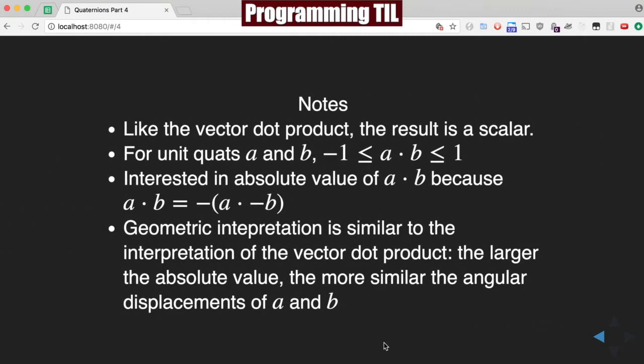A few notes. Like the vector dot product, the result is a scalar. If you have unit quats a and b, the a dot b is going to be between negative 1 and 1.